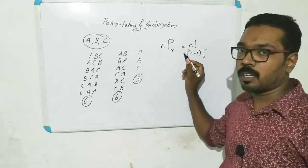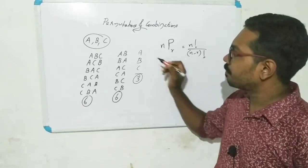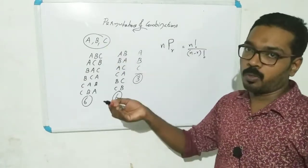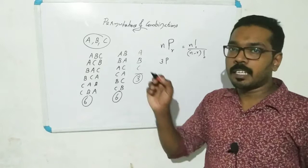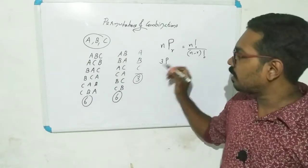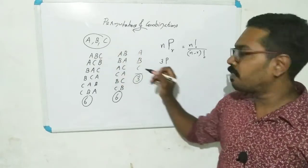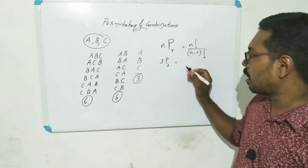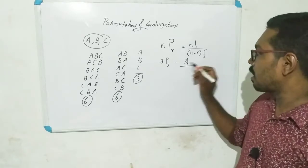This means n factorial divided by n minus r factorial. Here, how many terms do we have? Three terms. That means n equals three. We have to arrange all three letters, so r equals three. In this case, we write 3P3.